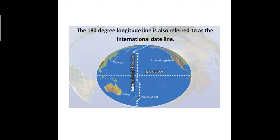The 180 degree longitude line is also referred to as the international date line, about which we will read later on. I hope you all have understood the concept of longitude and how to find out the location of places. You can also find out the location of other points and if possible send me the images on campus care.